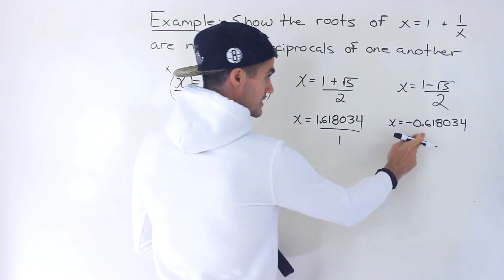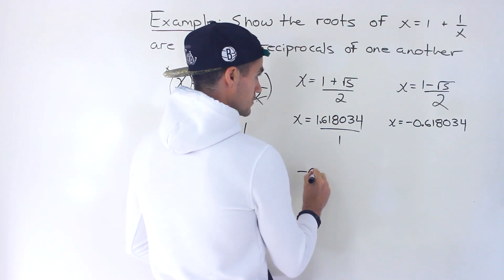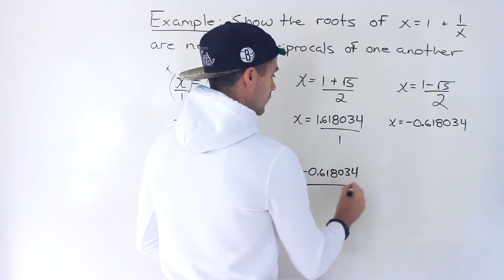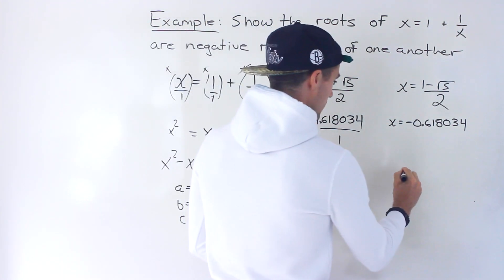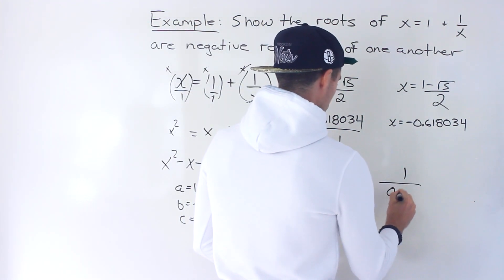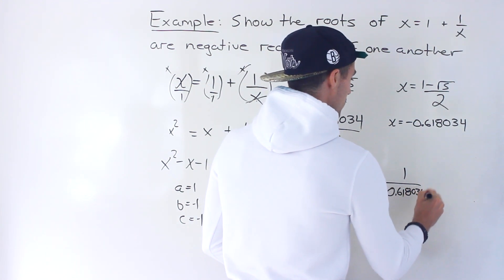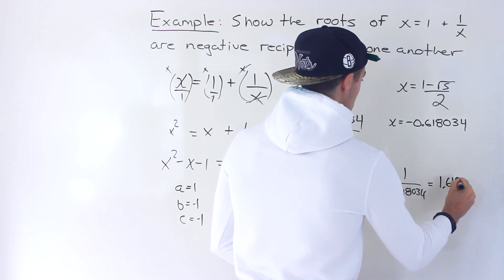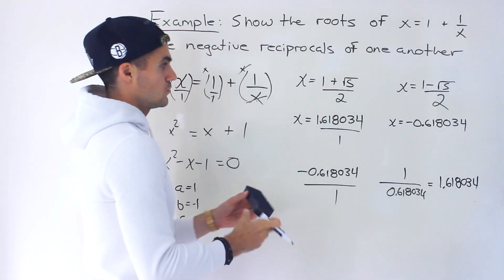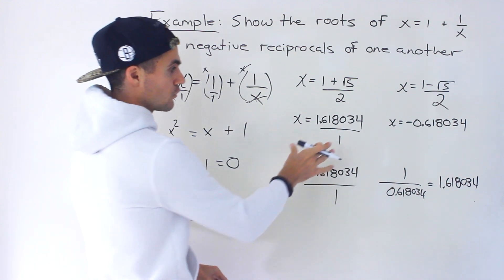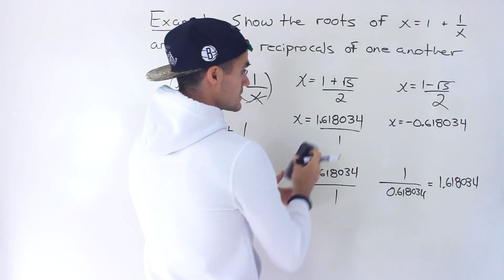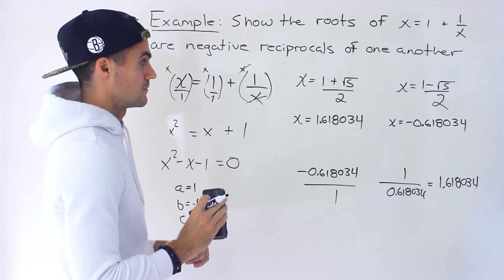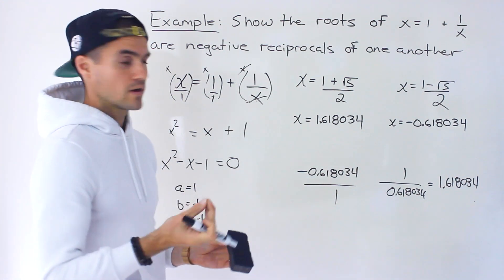You could also take the other root — this is like over 1. When we flip it and change the sign, we get positive 1 over 0.618034, and when you do that in your calculator you get 1.618034. So whichever direction you go, both roots are negative reciprocals of one another. That's how to do it with decimals.